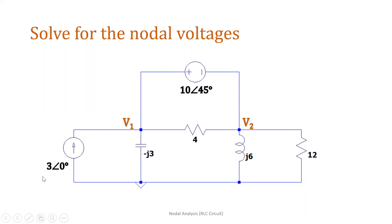We have a current source of 3∠0°, a voltage source of 10∠45°, and impedances: a resistance of 4 ohms, a reactance of −j3 for the capacitor, j6 for the inductor, and 12 ohms — another resistance.